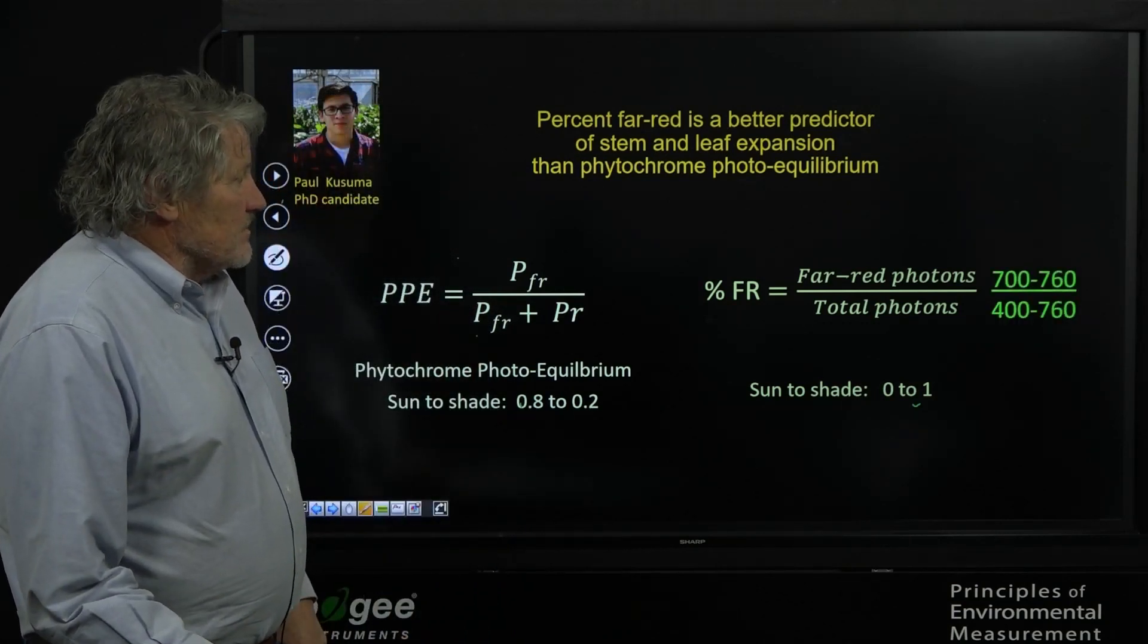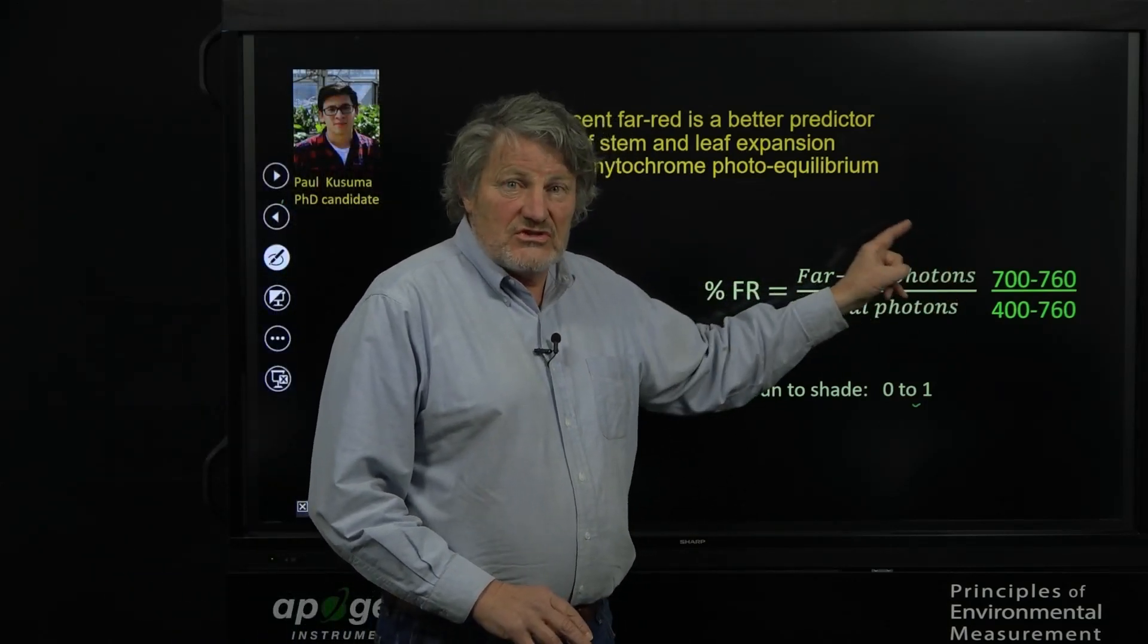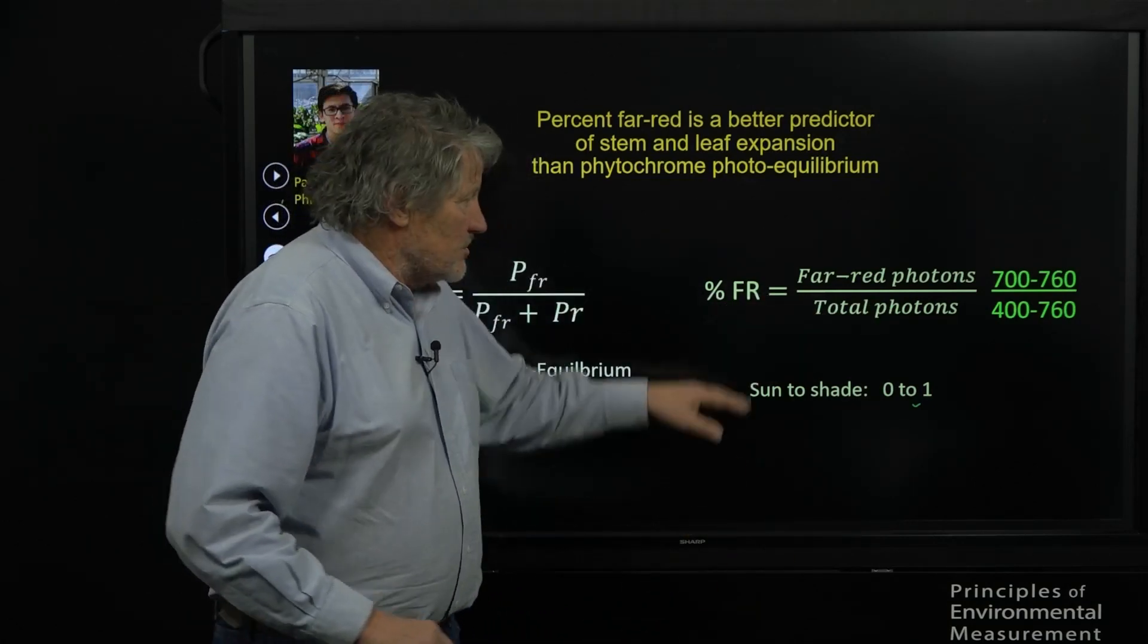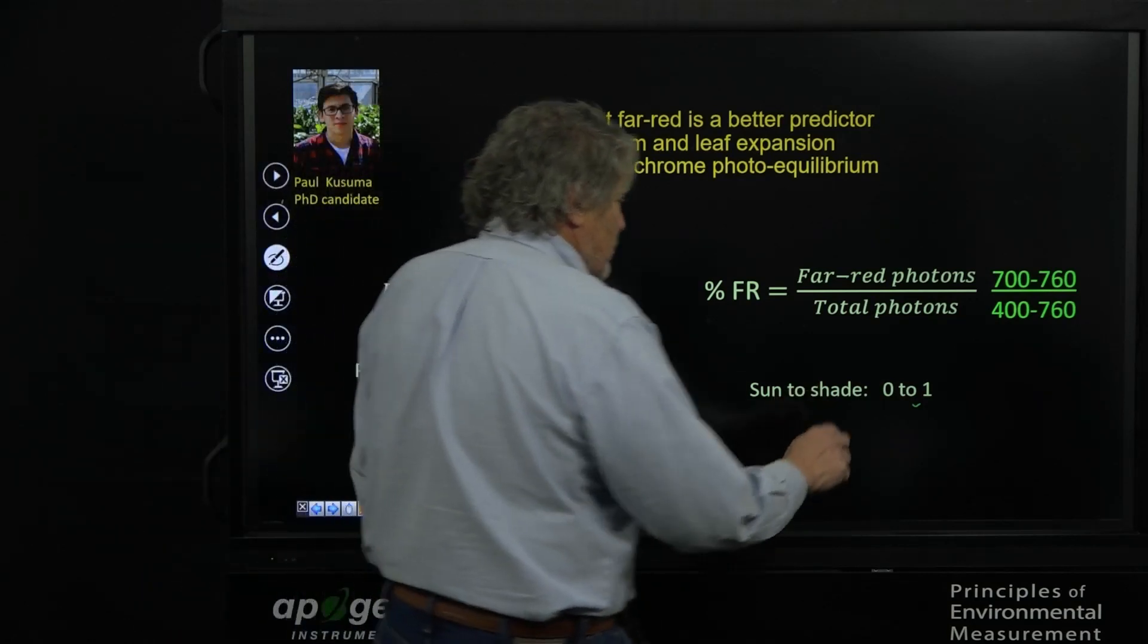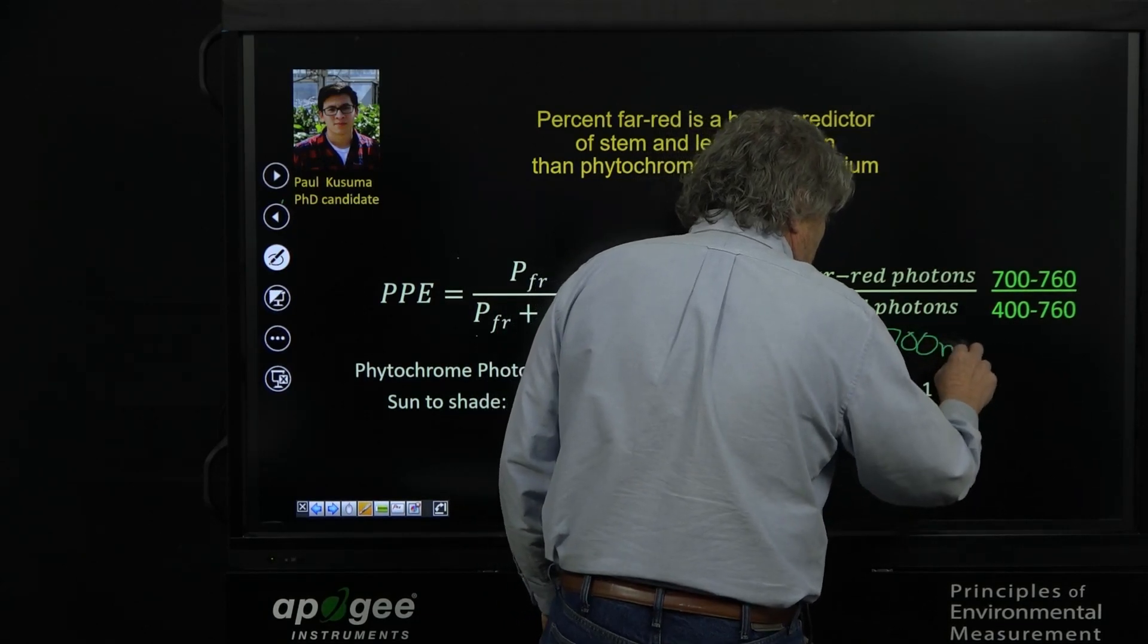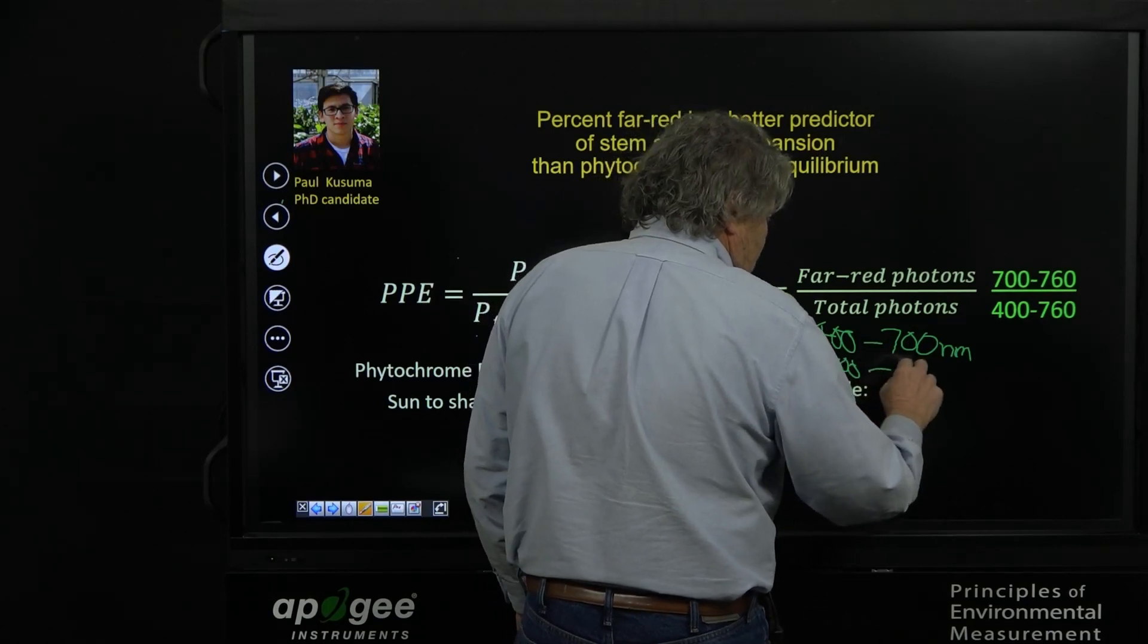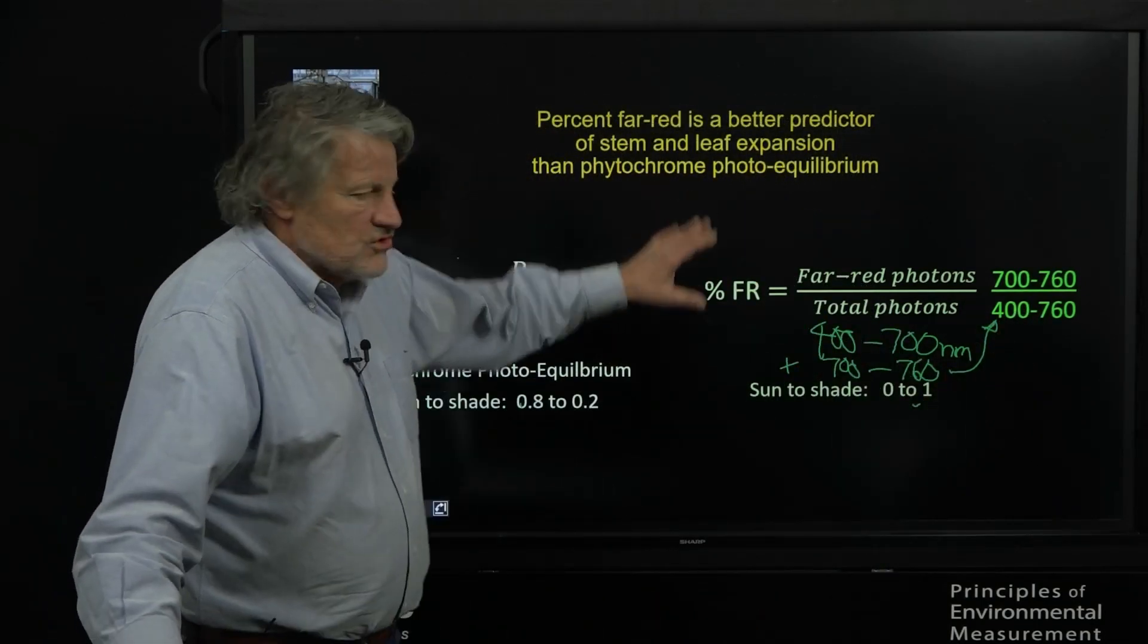Let's take a look at this. To define this, we need to define the range. So we use 700 to 760 nanometers for the far-red component, and 400 to 760 for the total. This is quantum. Photosynthetic photons are 400 to 700. Let me write that on here. 400 to 700 nanometers is photosynthetically active radiation. And so it's this plus 700 to 760. And some of those goes to that number. This is the percent far-red.